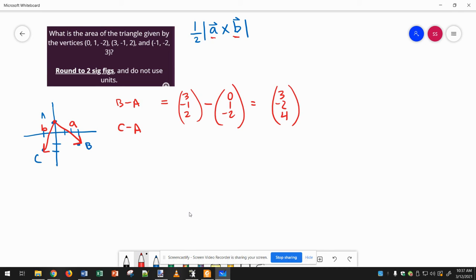And then the vector B, C minus A, so negative 1, negative 2, 3, minus A is 0, 1, negative 2. Again, really easy to make a mistake here. Negative 1 minus 0, negative 2 minus 1, and 3 plus 2. Okay, so now these are going to go in our vector product.